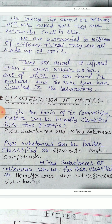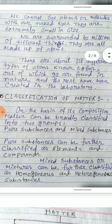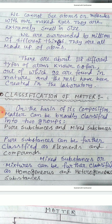We cannot see atoms or molecules with our naked eyes — they are extremely small in size. We are surrounded by millions of different things, all made up of atoms and molecules. There are about 118 different types of atoms known so far, out of which 92 are found in nature and the rest have been created in the laboratory.